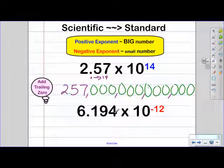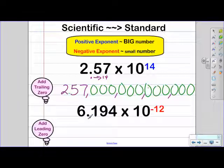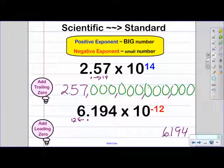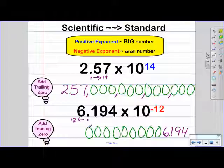For our last example, we are going to be adding leading zeros this time. We're going to be taking our decimal and moving it to the left to create a small number, moving it 12 times. So we make sure to leave enough space for our leading zeros. Our decimal starts here, and we move it 12 times to the left — that's 1 move, so I need to add 11 more zeros: one, two, three, four, five, six, seven, eight, nine, ten, eleven. And then our decimal is going to be here.